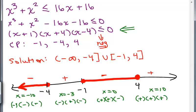We're using a lot of different algebra here: setting the inequality so we have a 0 on one side, factoring a four-term polynomial using grouping to find critical points, drawing the number line, testing intervals, and finally writing our answer in interval notation. There is a lot involved here.